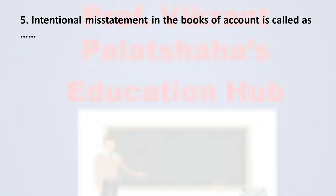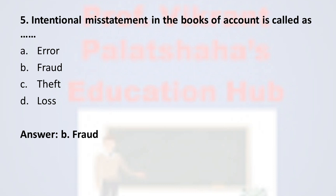Next question: intentional misstatement in the books of accounts is called as — option A error, option B fraud, option C theft, and option D loss. The correct answer is option B, fraud.